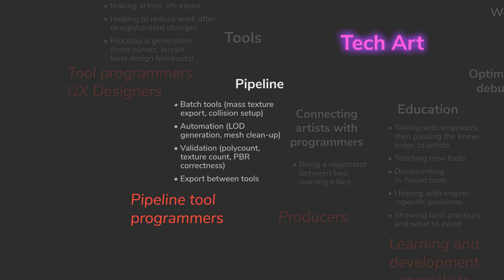That may be a nice batch tool. Also collision setup — because collisions may be required by the engine, otherwise things will clip through the ground, but making proper collisions can be time-consuming. So you may create an asset in Houdini that takes a mesh, creates a collision automatically from voxels, and exports it together with the mesh, even straight to the repository and later to the engine. Validation is also a great thing here — because artists may lose a lot of time having to check everything manually, like if the polygon count is OK, if they didn't exceed texture count on the mesh. Most of that job can be done with automated tools that warn the artist when something's wrong.